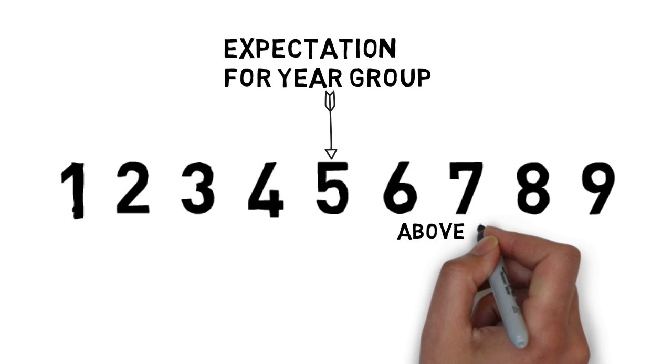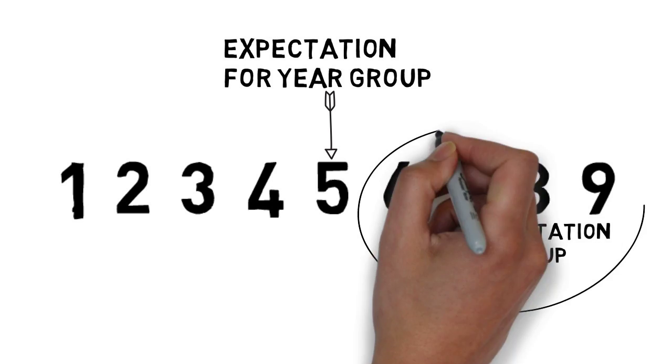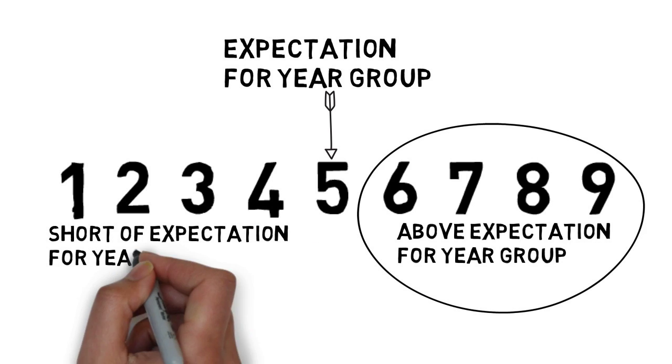It is very possible that a student will get a Band 5 in Year 7, 8, 9, and 10, and then go on to achieve a GCSE Grade 5. This means they are making good progress because each year they will need to master more competencies to stay at Band 5.